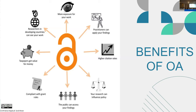Research shows that open access articles get higher citation rates, which makes sense because they're more openly available. Even more interesting, a recently published article found that open access journal articles receive more diverse citations than traditional paywalled articles — more geographical diversity and more disciplinary diversity in citations, and this was true across all subject areas. I've linked that article in the presentation and can share it with anyone interested.